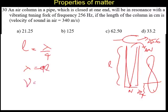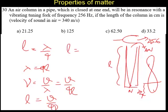So, what is the frequency? Frequency is V by lambda. So, it is V by 4L. So, L is equal to V by 4 nu. So, L is V by, V is given as 340 divided by 4 into nu is given as 256 hertz.